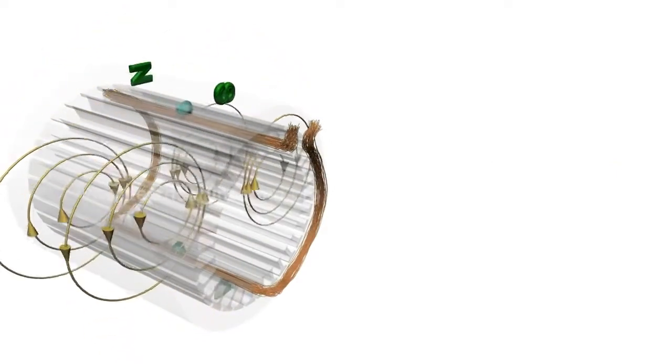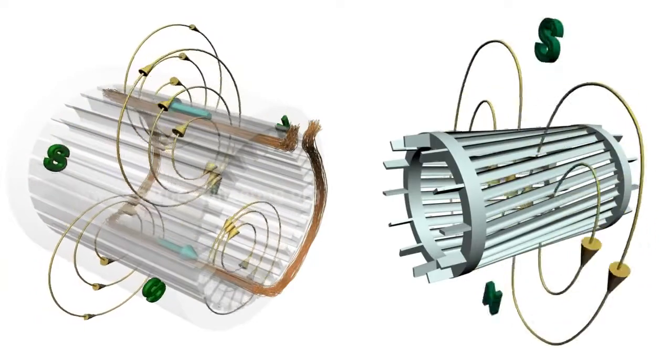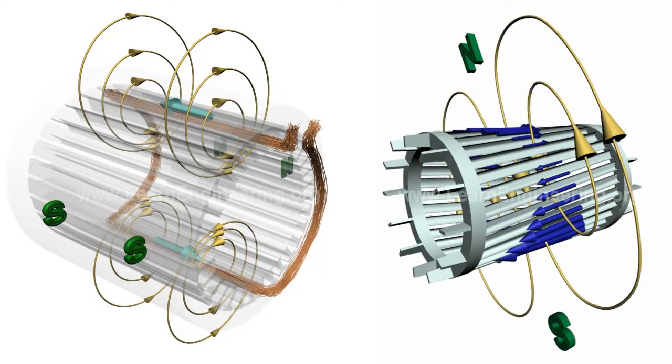Effect of rotating magnetic field on rotor is interesting. Since magnetic field is varying, electricity is induced in rotor bars due to electromagnetic induction.